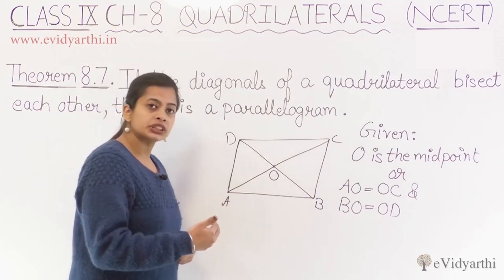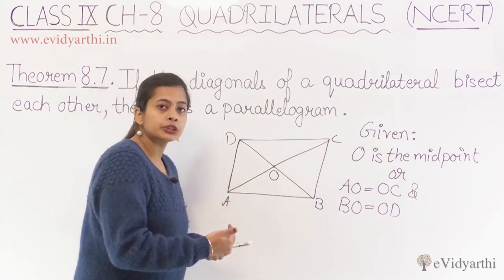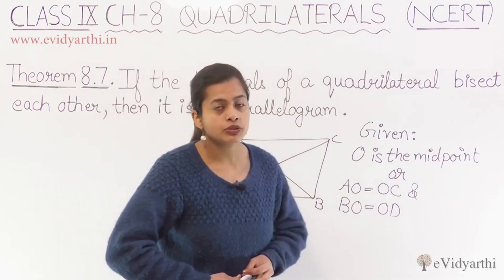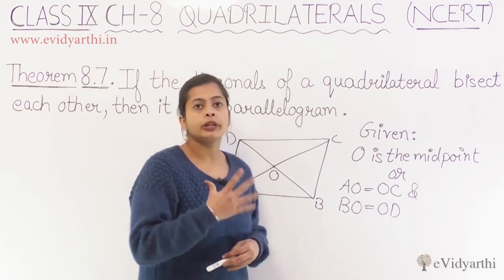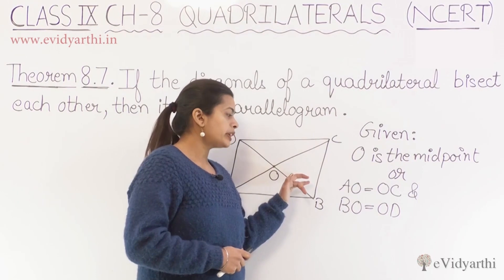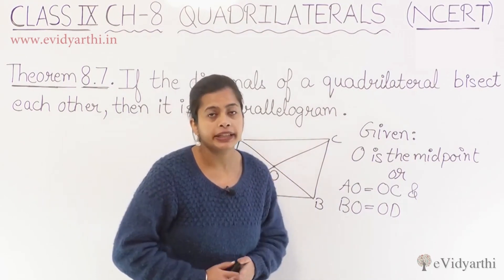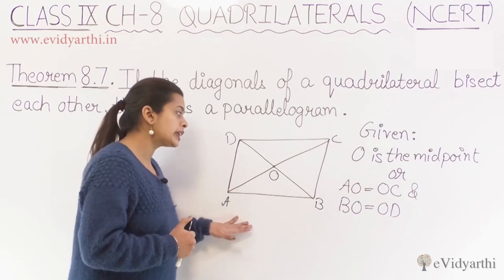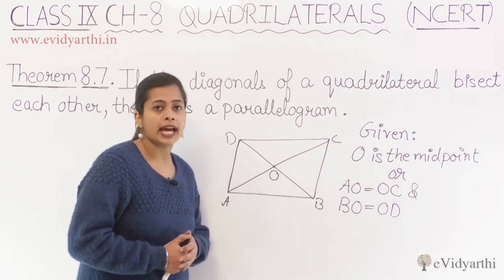In this way, you will get questions. Whatever application part there is, you will see it in questions. From that you will understand that if we have any quadrilateral and we know that the midpoint of its diagonals is bisecting the diagonals into two equal parts, then we can say that the quadrilateral we have is a parallelogram.